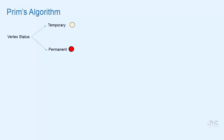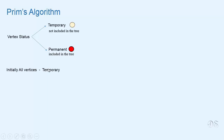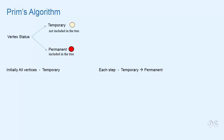We will give each vertex a status. If a vertex is temporary, it means that it has not been included in the spanning tree, and if a vertex is permanent, it means that it has been included in the spanning tree. Initially, all vertices will be temporary, and at each step of the algorithm, we will make a temporary vertex permanent. The process stops when all the vertices become permanent — that is, when all the vertices are included in the spanning tree.